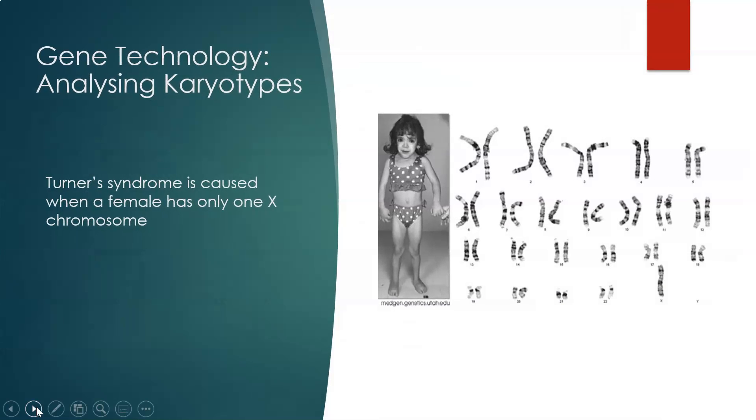Turner syndrome is another genetic condition that is caused when a female only has one X chromosome. If we look at this karyotype here, we can see we've got pairs right down to 22, but in this case we only have one X chromosome. Whereas a female shows us two X chromosomes, in the case of Turner syndrome, we only have that one X chromosome.